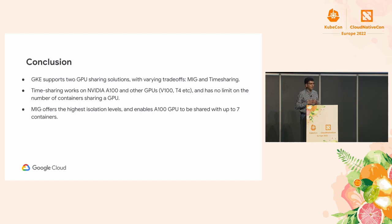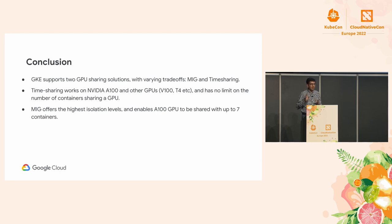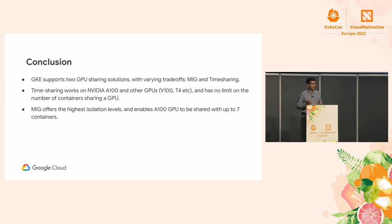In summary, the key takeaways are: we offer two solutions for GPU sharing on Kubernetes. The time sharing solution works on every GPU family and offers better utilization for bursty workloads. MIG only works on A100 GPUs but provides better isolation, quality of service, and out-of-memory protection. Depending on your workload needs, you can choose either — but keep in mind this is only appropriate within a single trust boundary. Don't use it across customers. Thank you.